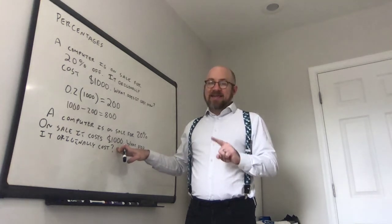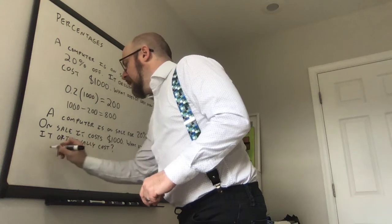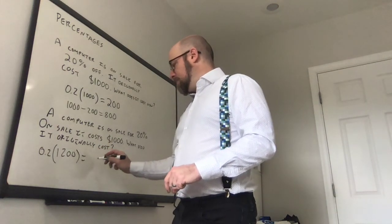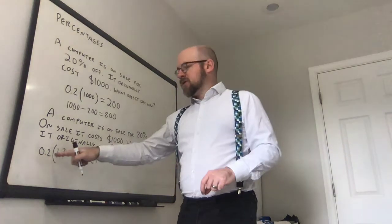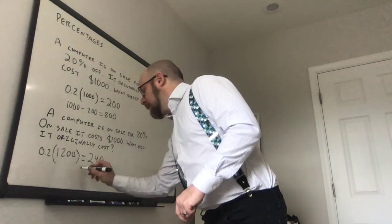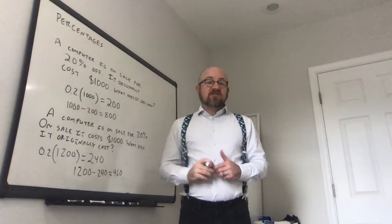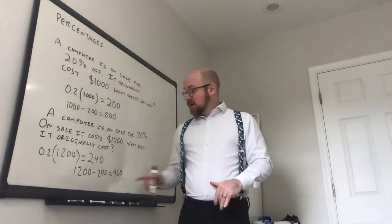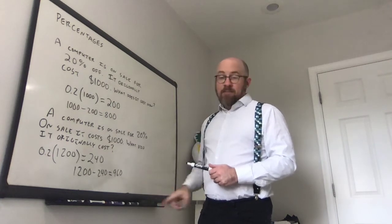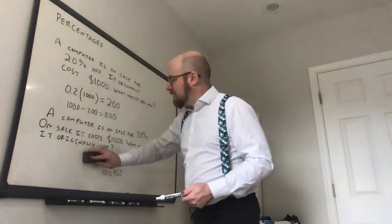But that doesn't work. That is not the case. If something was originally $1,200, and you take 20% of that, so 20% of 1,200 is $240. If we had started with a price of $1,200 and took 20% off of it, we would subtract 240 and we would end up with 1,200 minus 240, which is 960. So if it had started out at $1,200 and had been reduced by 20%, it would cost $960. So $1,200 is not the correct answer here. It did not originally cost $1,200 because that doesn't give us a price of $1,000 after we cut 20% off.